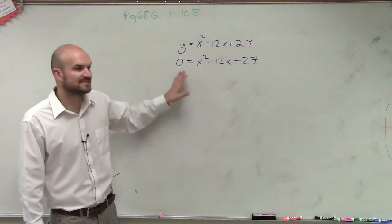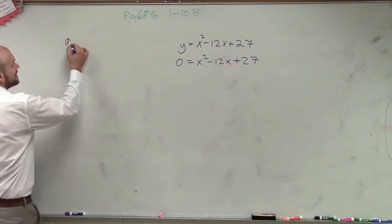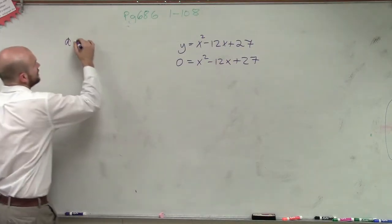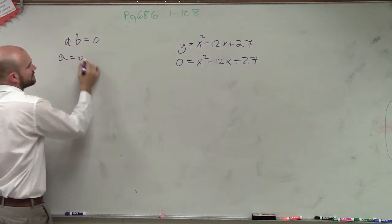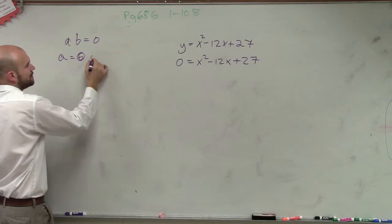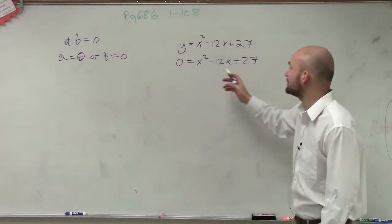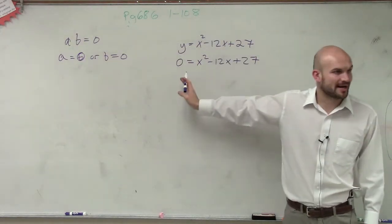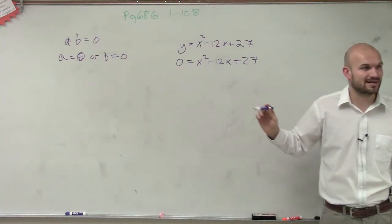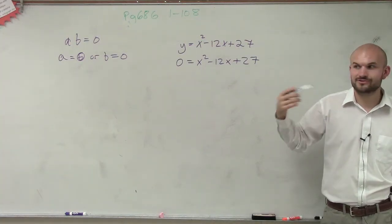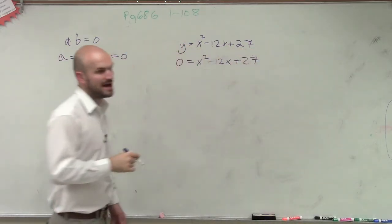So what we can do is — since we have it set equal to zero — we can apply the zero product property. If we can write this polynomial as A times B equals zero, then we know that we can say A equals zero or B equals zero. So what I need to do is say: can I rewrite this as a product? Does anybody remember the process of taking a polynomial and writing it as a product? That is called factoring.